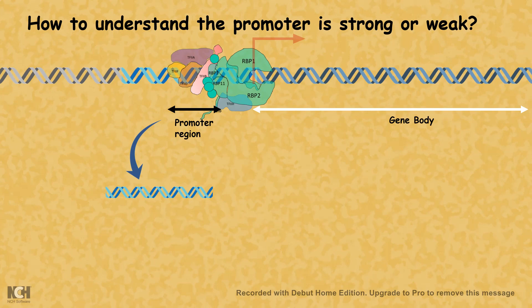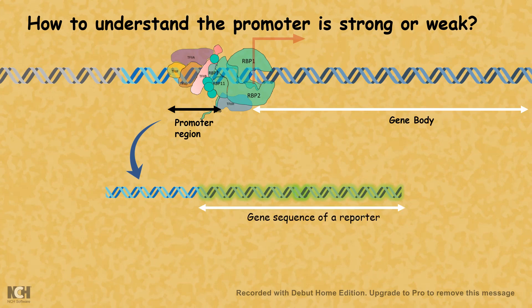You know the transcription machinery assembles with that sequence, then you put a reporter element which you can detect. For example, in this particular case we have put a GFP transgene downstream of this promoter. If the promoter is getting activated, GFP would be transcribed and translated, and as a result we can detect the fluorescence.